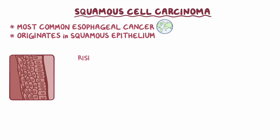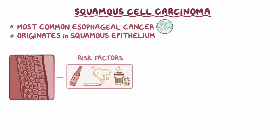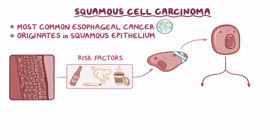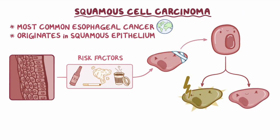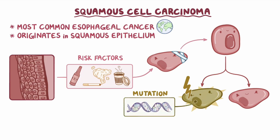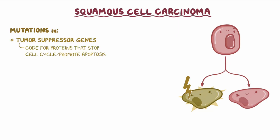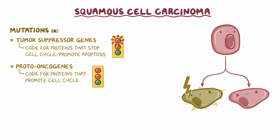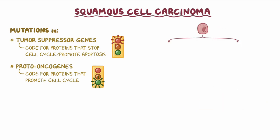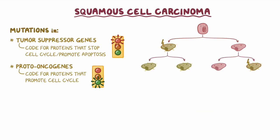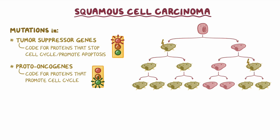When this epithelium is repeatedly exposed to risk factors like alcohol, cigarette smoke, or hot fluids, it gets damaged, so the squamous cells divide to replace the old damaged cells. With each division, there's a risk that a mutation can occur in the genes in charge of the cell cycle and cell division. Mutations can occur in tumor suppressor genes, which normally code for proteins that stop the cell cycle or promote apoptosis — like the cell cycle's brake pedal — or in proto-oncogenes, which code for proteins that promote the cell cycle, acting as the accelerator pedal. When this happens, squamous cells start dividing uncontrollably, and more mutations accumulate with each division. Eventually, these mutations might make the cells malignant, meaning they gain the ability to invade neighboring tissues and spread to distant sites.